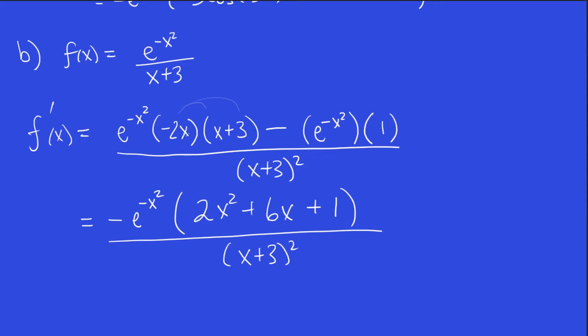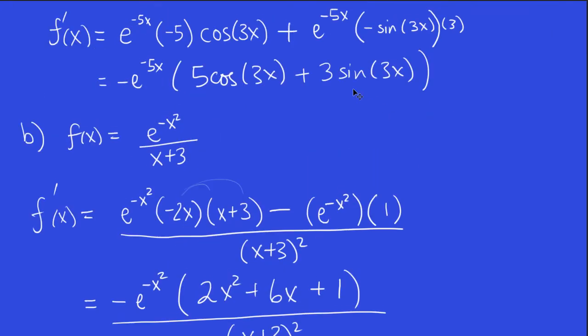Did I do that correctly? 2x squared, the negative is gone, plus 6x. And here, all that's gone, plus 1 is left over. Great. Let's look at question C here.